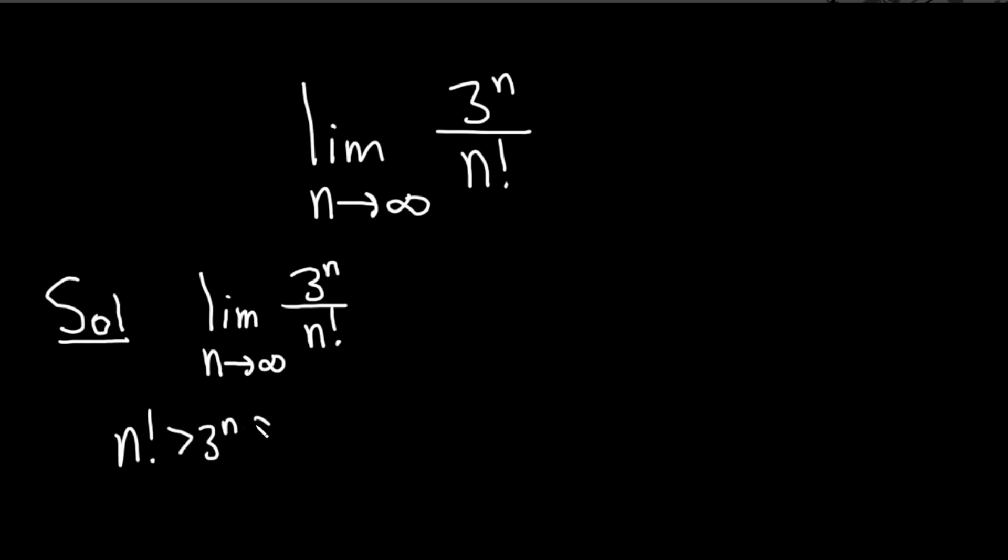for n sufficiently large. So if n is big enough, this inequality is going to be true. So this fraction is getting smaller and smaller because the denominator is growing at a faster rate than the numerator.